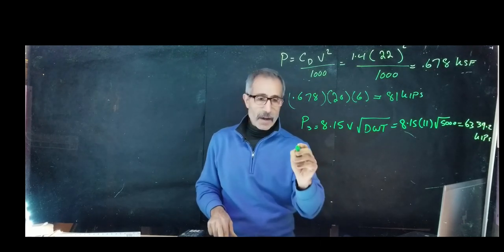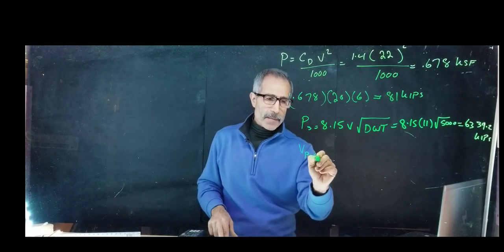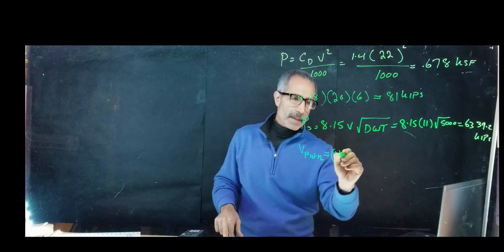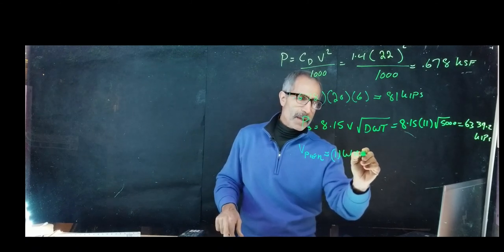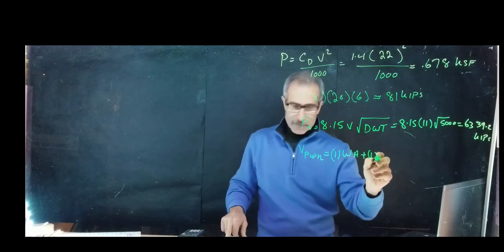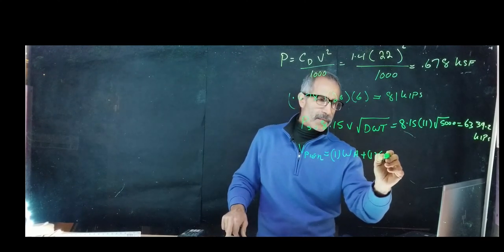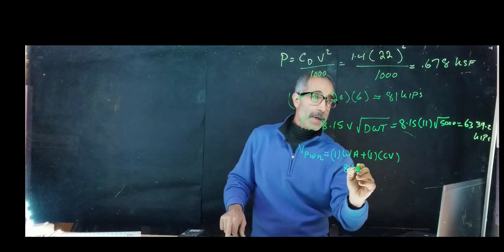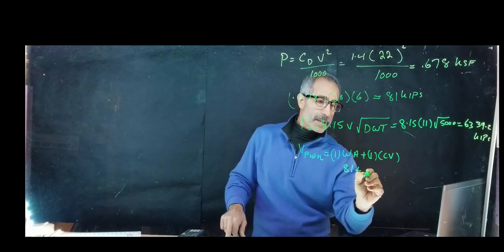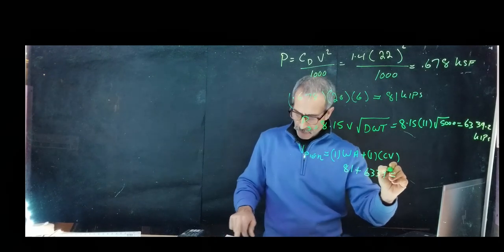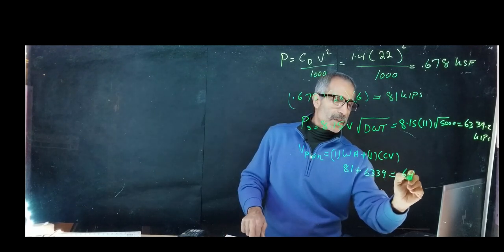The extreme event 2, the V of the pier is going to be 1 times WA plus 1 times CV. That comes out to 81 plus 6339, which should give me about 6420 kips. That's our answer. That's how much force the collision is going to put on the pier.